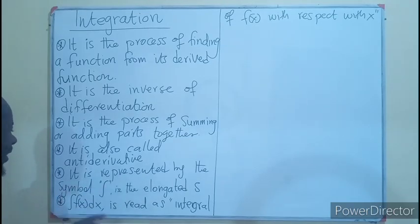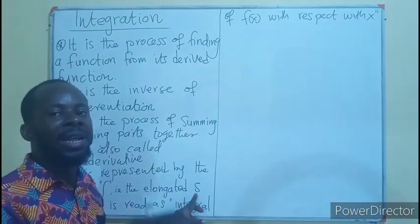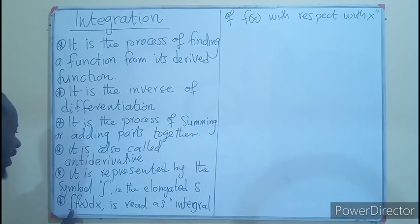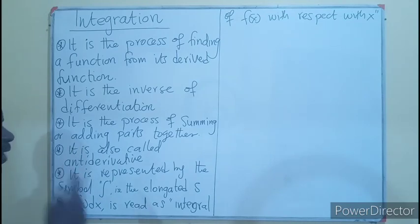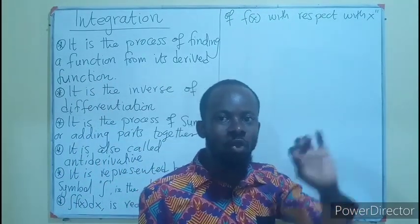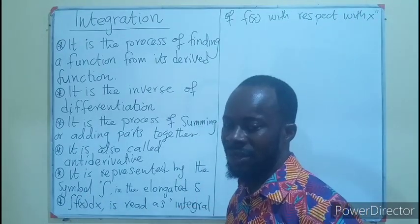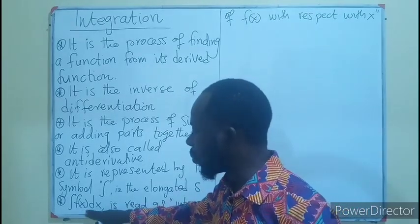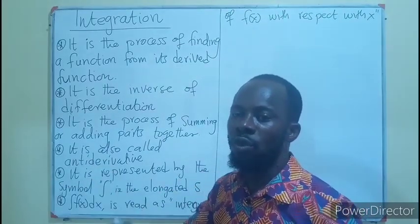Integration is always represented by a symbol which looks like an elongated S. So you are just writing S but you make it elongated a little bit — that becomes the symbol for integration. The integration sign with the function dx is read as: the integral of f(x) with respect to x. The function is always placed between the elongated S and dx. The dx is always added in conjunction with the integration sign so that the function will always be in between.